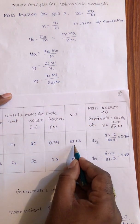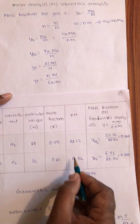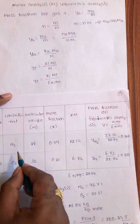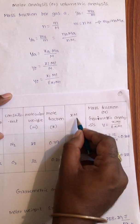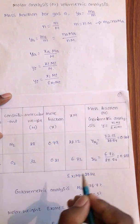This X into M, this times this gives this. This value indicates XM for nitrogen, this value indicates XM for oxygen. X into MN2 is 22.12 and XO2 MO2 is 6.72.